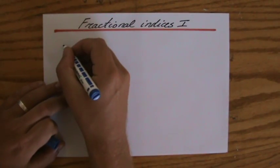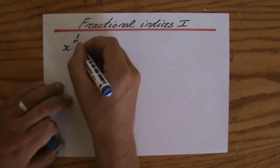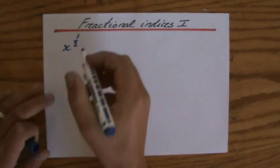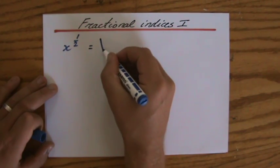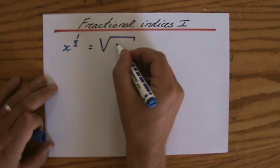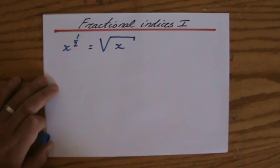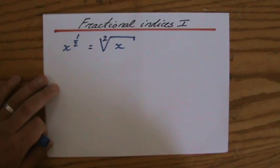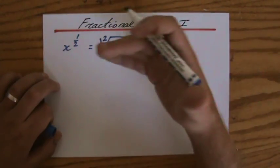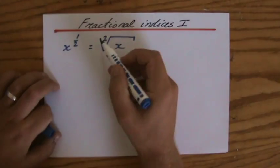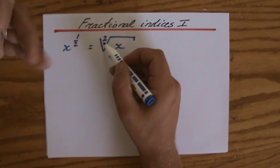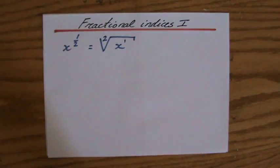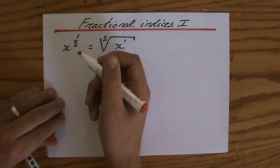In general, we say that x to the power of a half, a fractional index, is the same as the square root of x. I'm just going to put some numbers there, because there should be a 2 there actually, but because the square root is the most common root, we never write it. We only write a 3 or a 4 when it's the cube root or the fourth root. And x is actually x to the power of 1, like everything is to the power of 1, and we don't write that either.